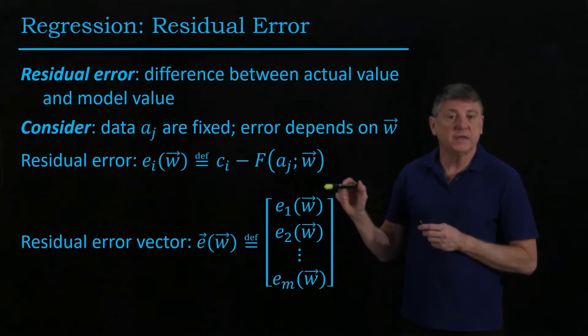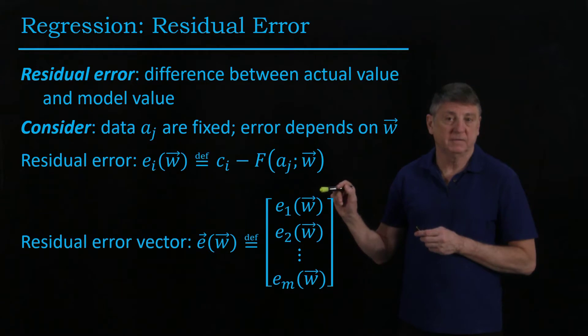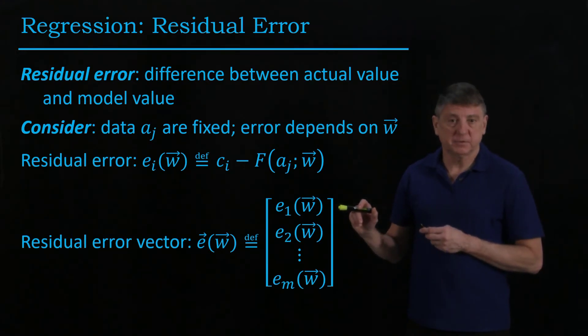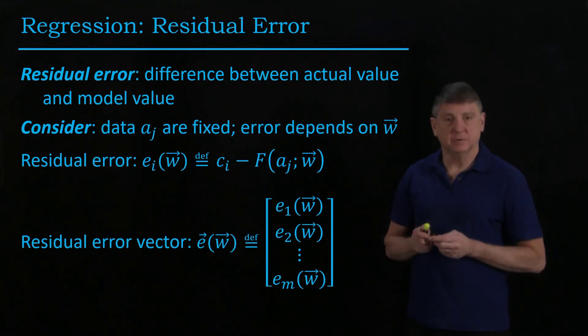And each entry of the error vector depends on the same weight vector, the same weight parameters that we're using. And we'll have an error for every observation, beginning at observation one and ending at observation m.